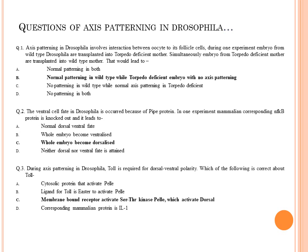Last question: during axis patterning in Drosophila, Toll is required for dorsal-ventral polarity. Which of the following is correct about Toll? जब हम लोगों ने वो diagram पढ़ा था, तो Toll की position एक membrane-bound receptor की थी, ना कि cytosolic receptor। Toll is a membrane-bound receptor that activates serine-threonine kinase। आपने देखा था किस तरीके से Toll receptor की वजह से Pelle पहले activate हो रहा था, और फिर वो जाके dorsal protein को activate कर रहा था। So option C is the right answer।